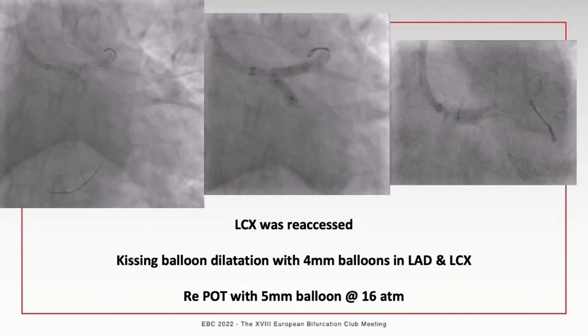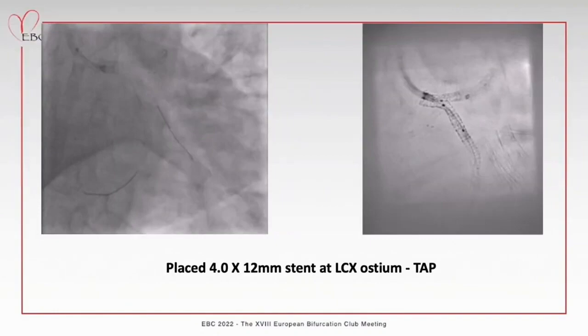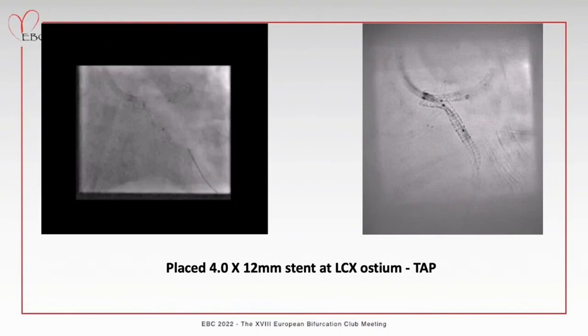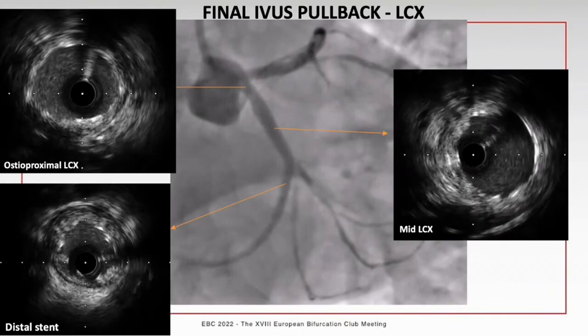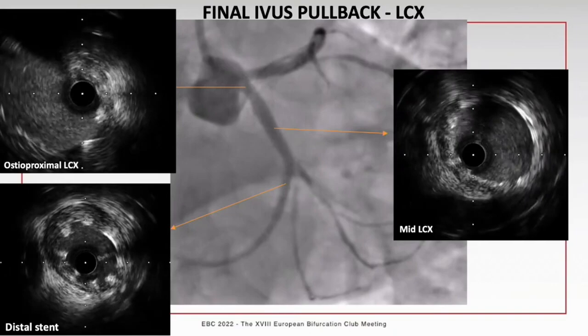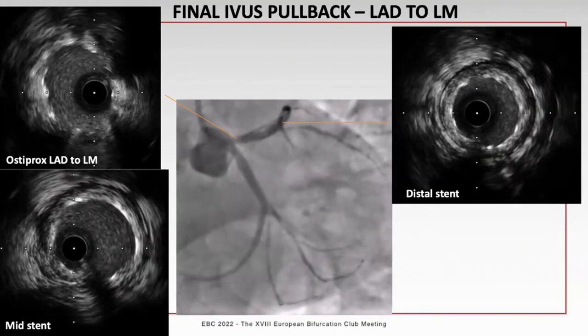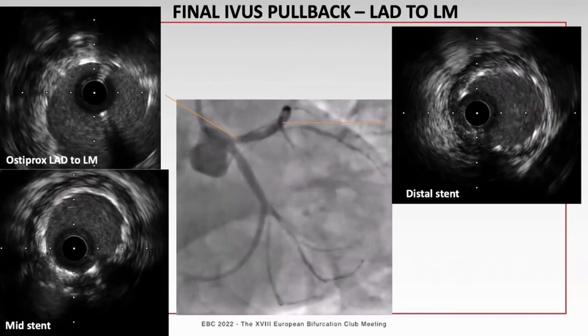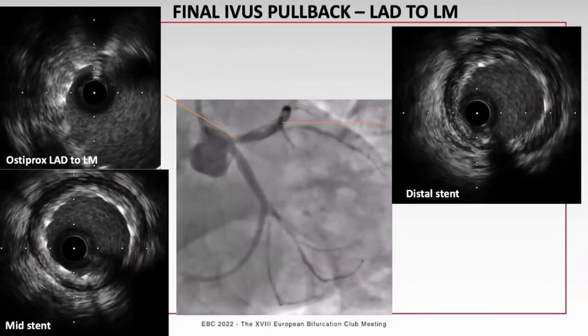The circumflex was re-accessed and kissing balloon dilatation with 4mm balloons in LAD and circumflex was performed - now the circumflex balloon was expanding properly. After rePOT with 5mm balloon at 16 atmospheres, a 4 x 12mm drug-eluting stent was placed at the circumflex ostium in a TAP fashion. Kissing balloon dilatation was performed after pulling the balloon slightly back to the left main. IVUS pullback from distal circumflex showed stent well expanded and apposed; minimum stent area at circumflex ostium was 10.5mm². IVUS from LAD showed minimum stent area of 10.7mm² and left main minimum stent area greater than 13mm².